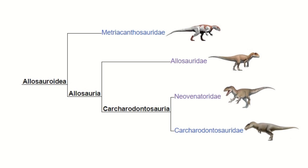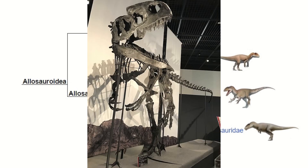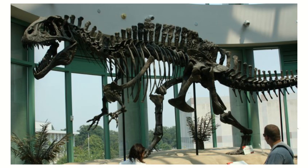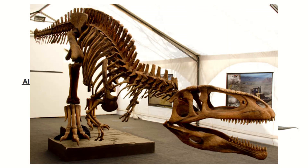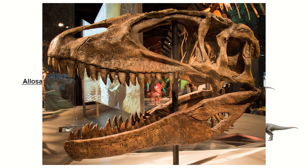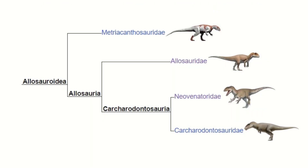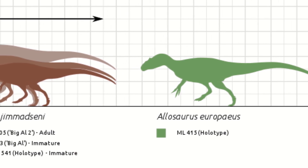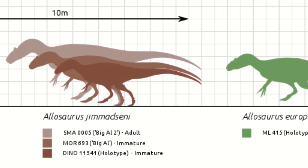This particular dinosaur falls within the family Allosauridae, which not only contains Allosaurus but also Neovenator, Megaraptor, Acrocanthosaurus, Tyrannotitan, Mapusaurus, Carcharodontosaurus, and the famous — but now even more famous — Giganotosaurus.